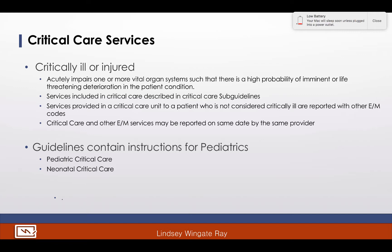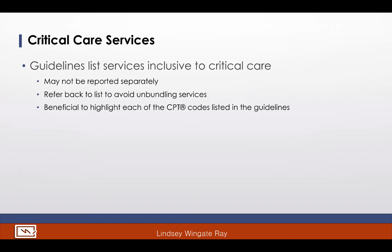CPT also includes instructions for reporting pediatric critical care and neonatal critical care, which will be further discussed when we reach those sections. There are a lot of guidelines in the critical care services part of your CPT book, and you should review those and make notes. CPT includes a list of services that are considered inclusive to critical care. These services should not be reported separately when provided during the critical care period by the same physician. You will need to refer back to it when coding for critical care to avoid unbundling services or missing opportunities to bill additional services. It may be beneficial to highlight each of the CPT codes listed in the paragraph.